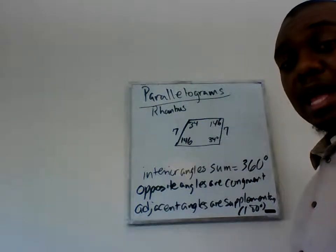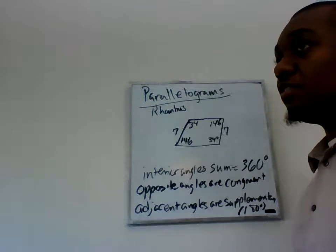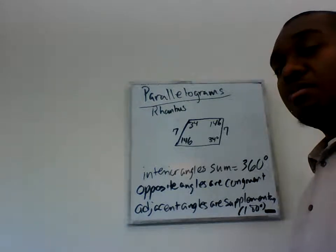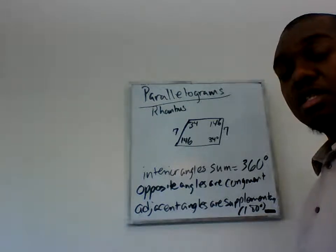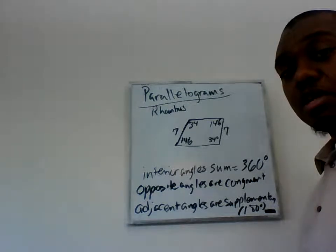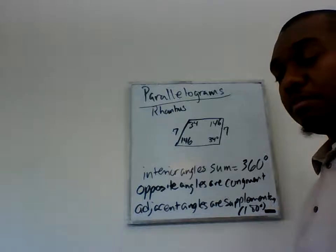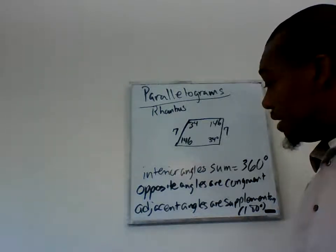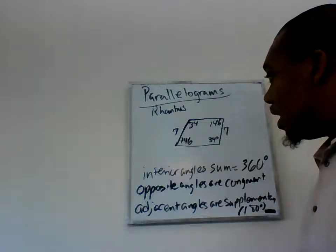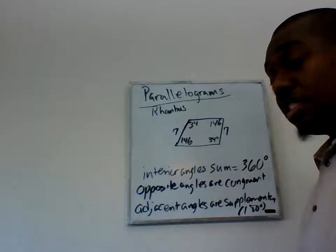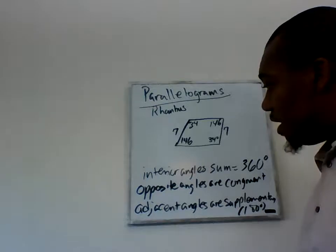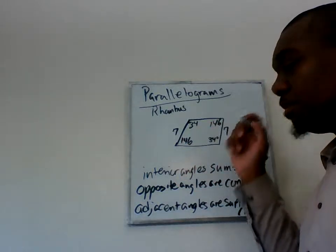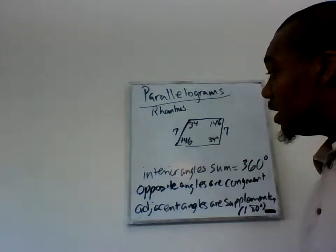So we got all of that just from parallelogram properties. There's something else that's kind of cool here. If I were to draw a diagonal, it would split this angle in half.